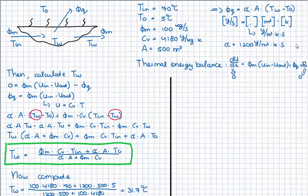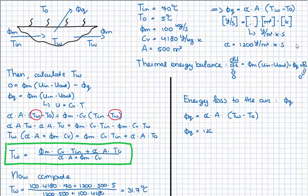The next question was to calculate the energy loss to the air, or actually the heat flow Vq. We know the equation for Vq, which is alpha times the area times delta T. Since we calculated the temperature of the water, we can fill in the numbers and get 60 million joules per second, which is 60,000 kilojoules per second.